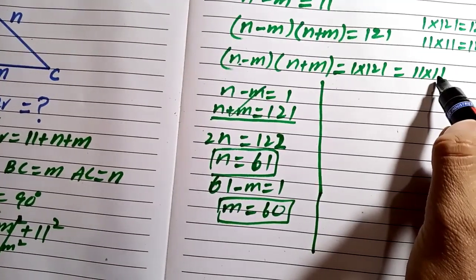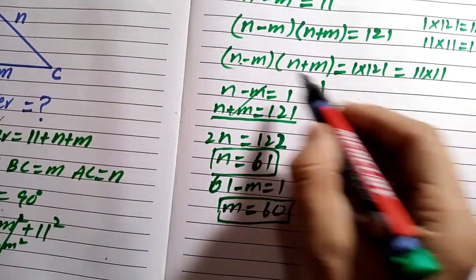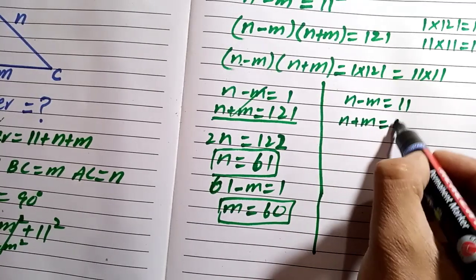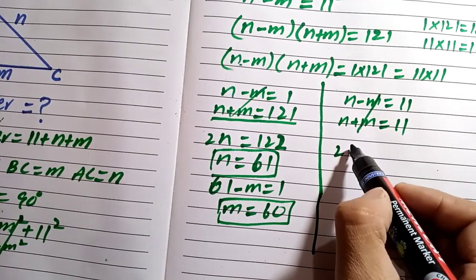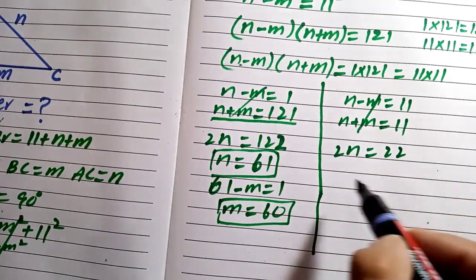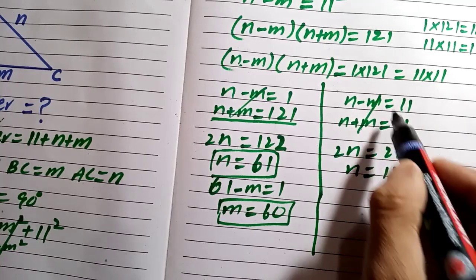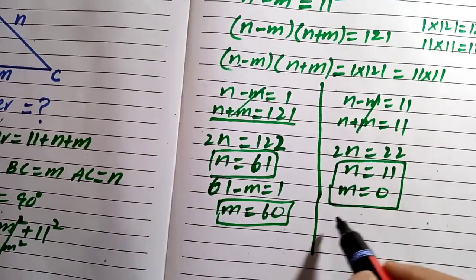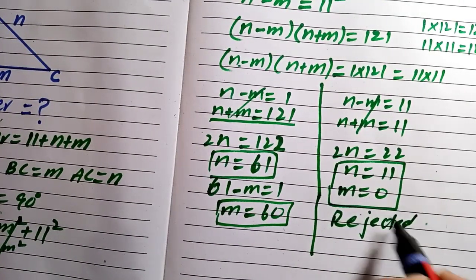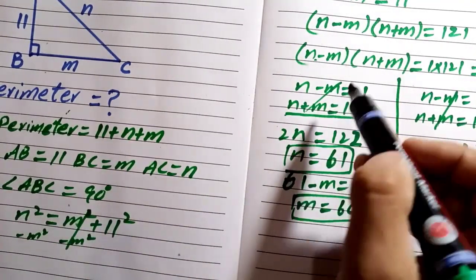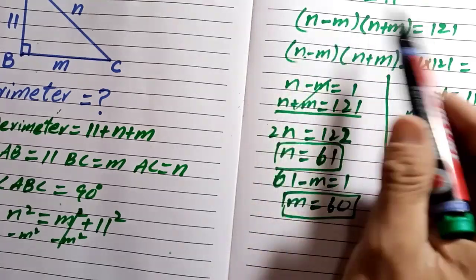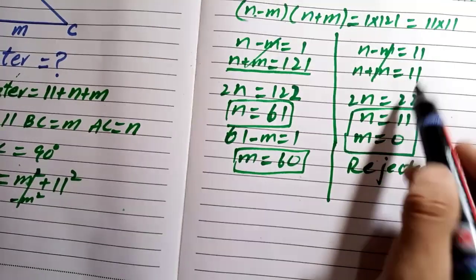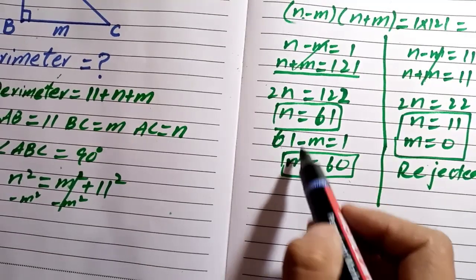If we instead use 11 times 11 as the factor pair, we get n minus m equals 11 and n plus m equals 11. Adding these gives 2n equals 22, so n equals 11, and substituting back gives m equals 0. This solution must be rejected because m cannot equal zero — a side length of zero would make the triangle invalid.